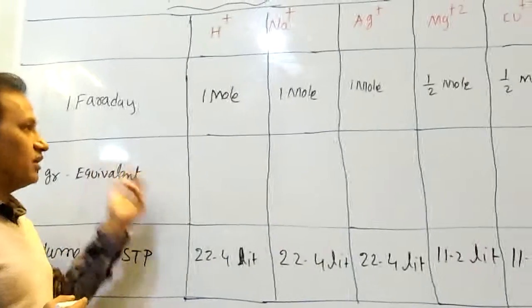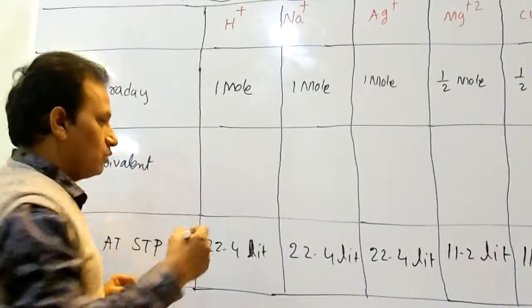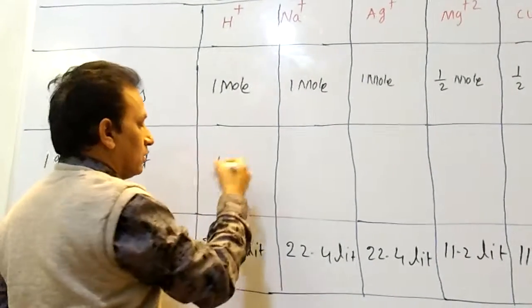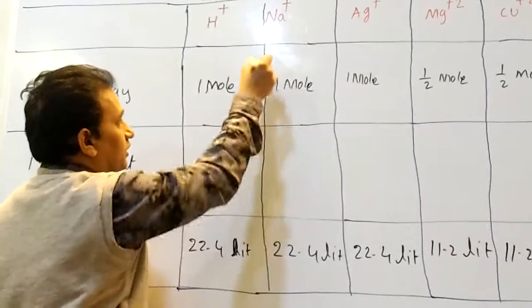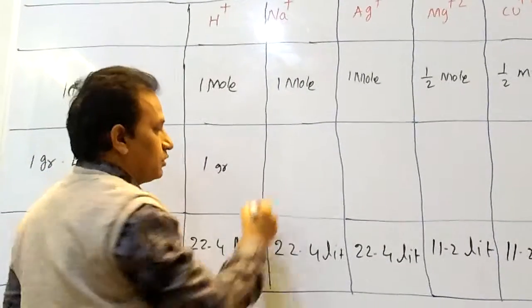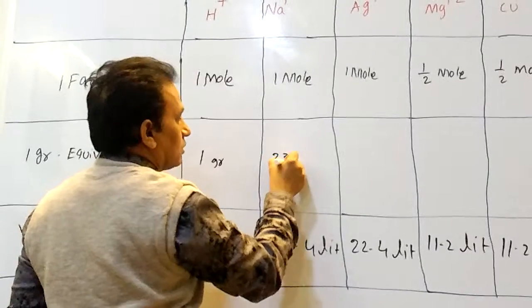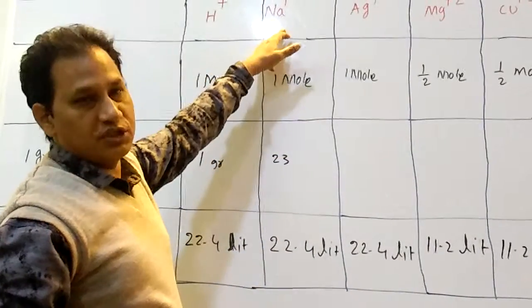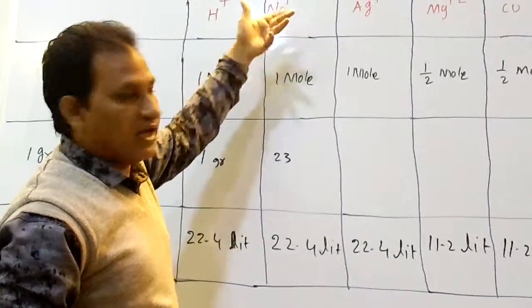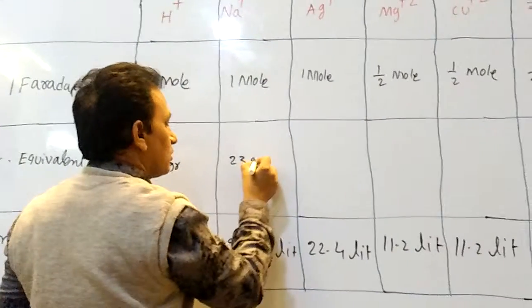I am coming to how much amount of substance deposited in gram equivalent weight. H means 1 gram. Here, sodium is deposited 23. Gram equivalent weight is 23 by how many charges? One. Balance is one, 23 grams.